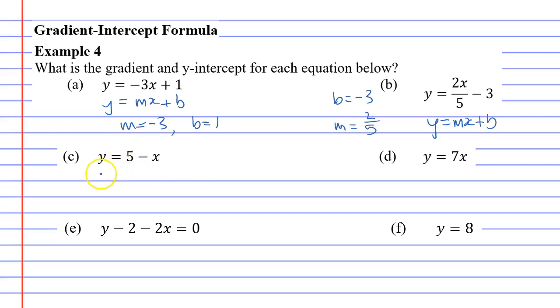Looking at question C now, if I write the gradient-intercept formula down, you'll notice that things are not really in the right order. m should be in front of x, but mx lines up with the 5. So what you need to do is take this equation and rearrange it, and be very careful. This is technically positive 5, and this is technically negative x. So we're going to switch places, making sure you switch the signs appropriately too. When I talk about signs, I mean the negatives and the positives.